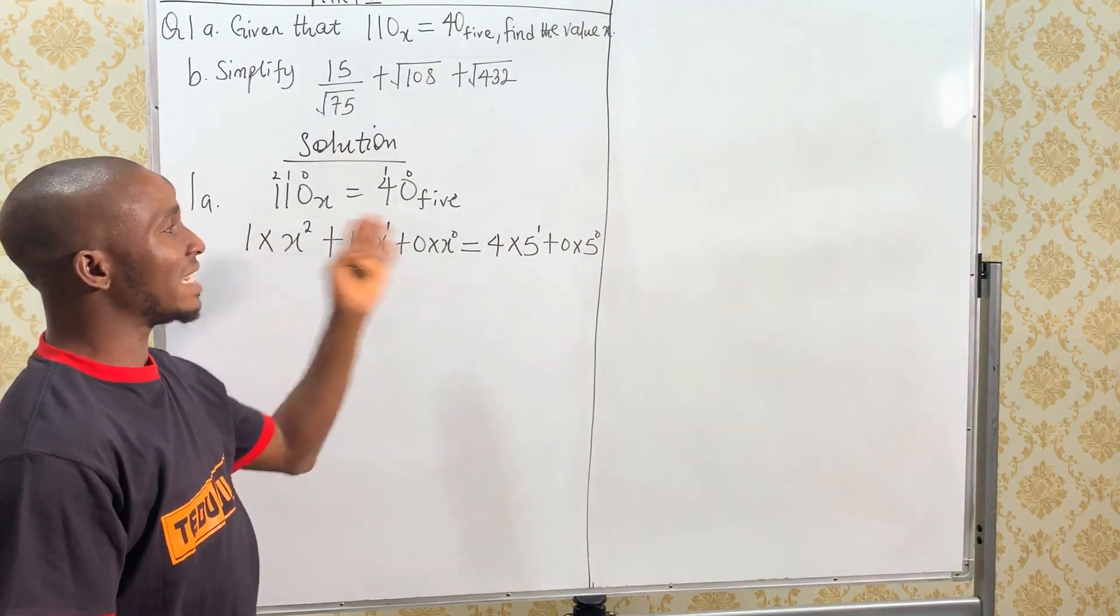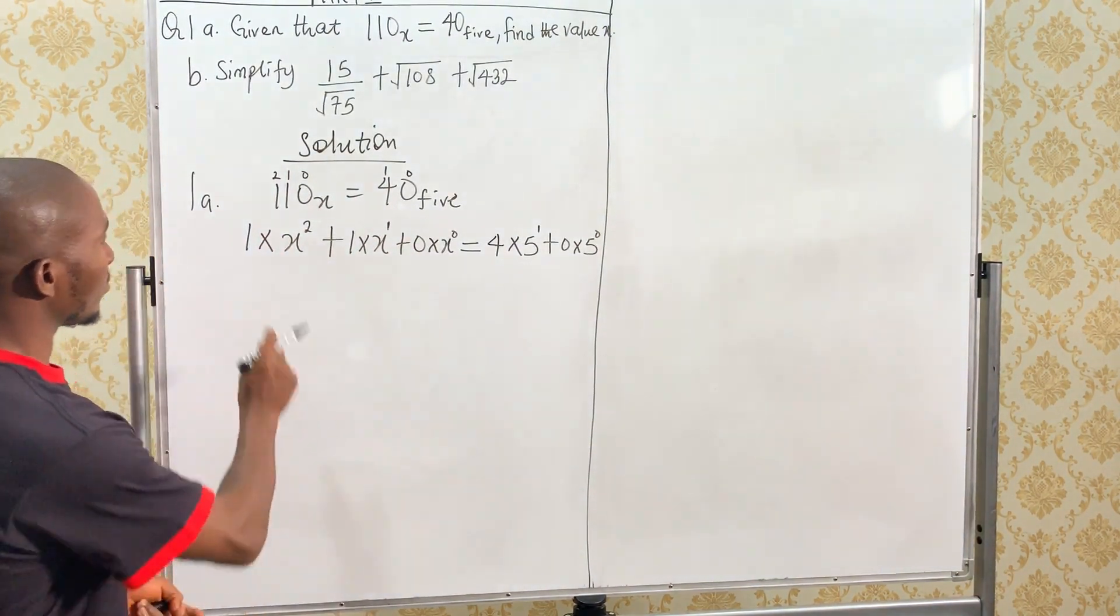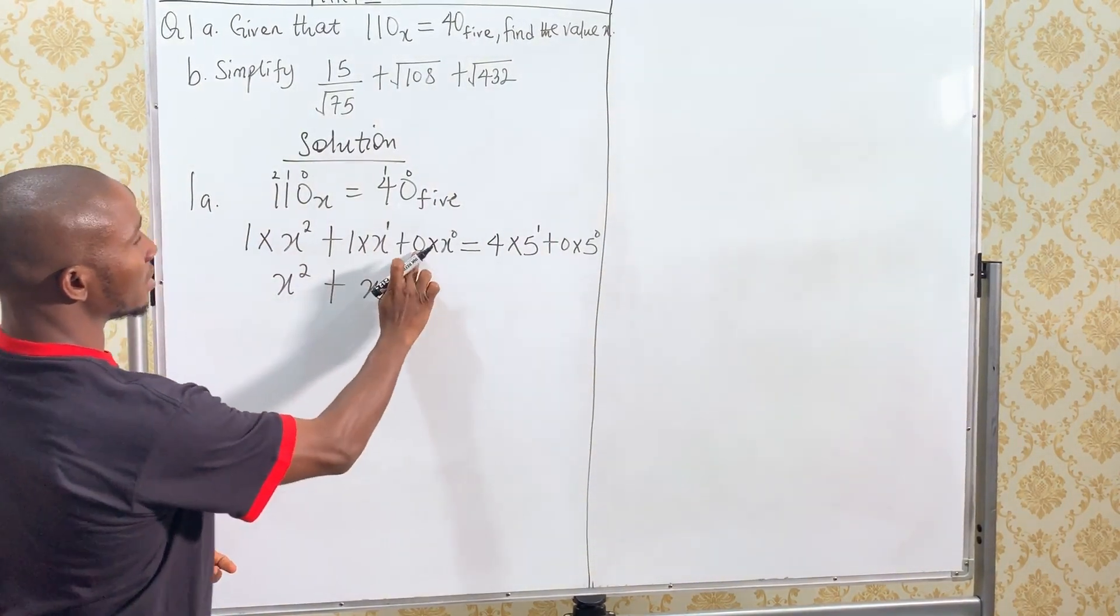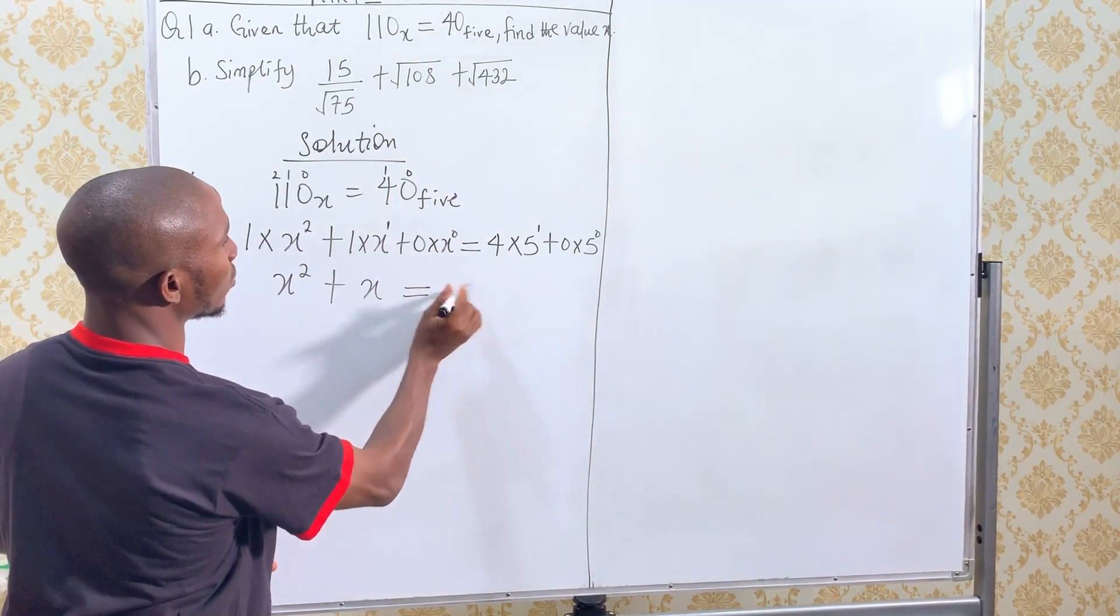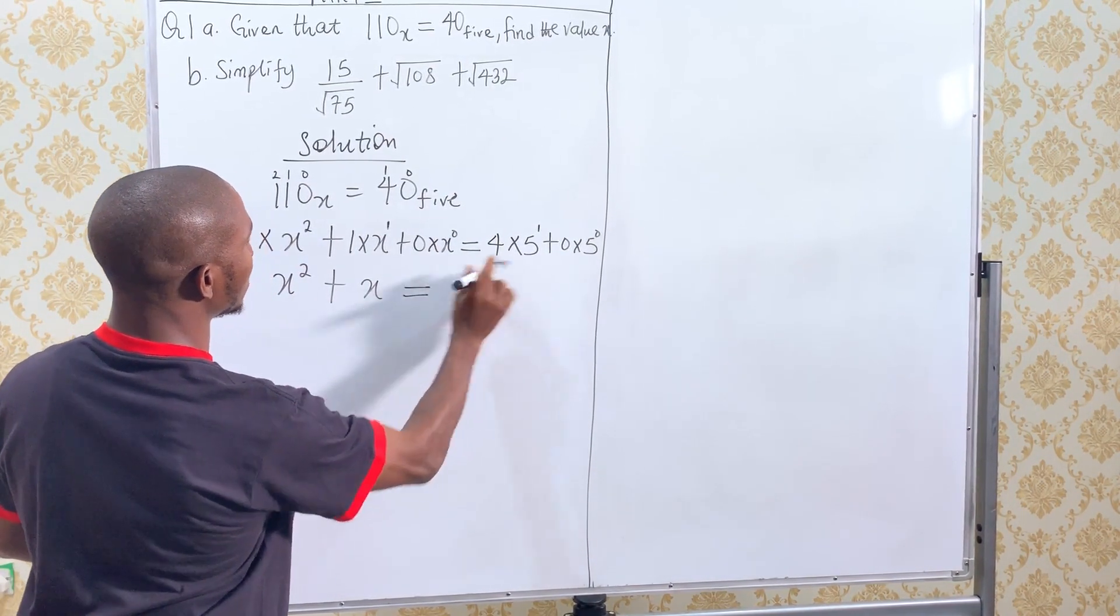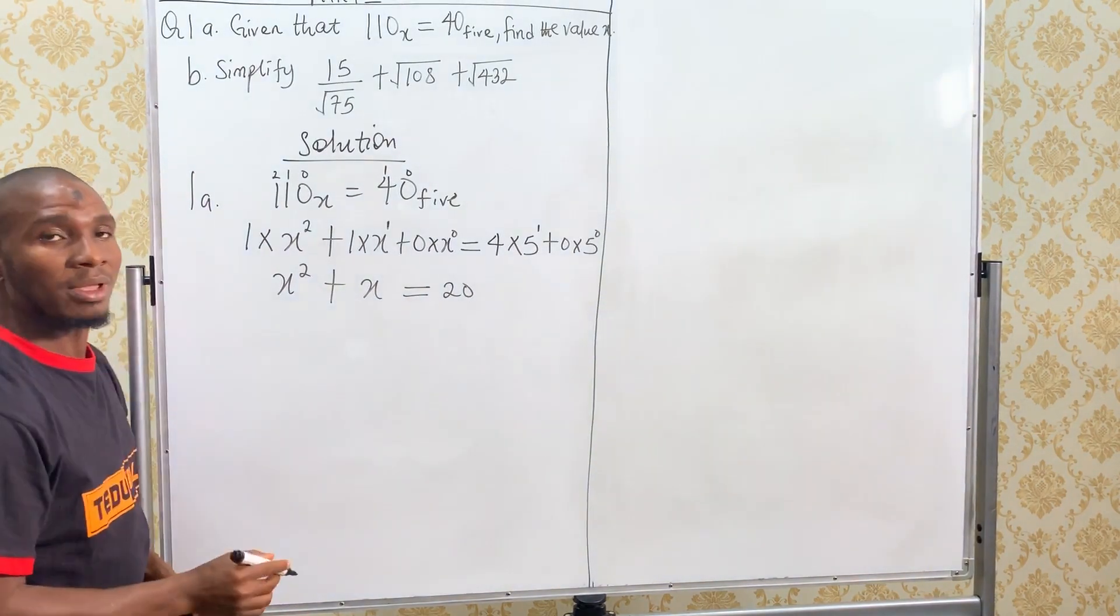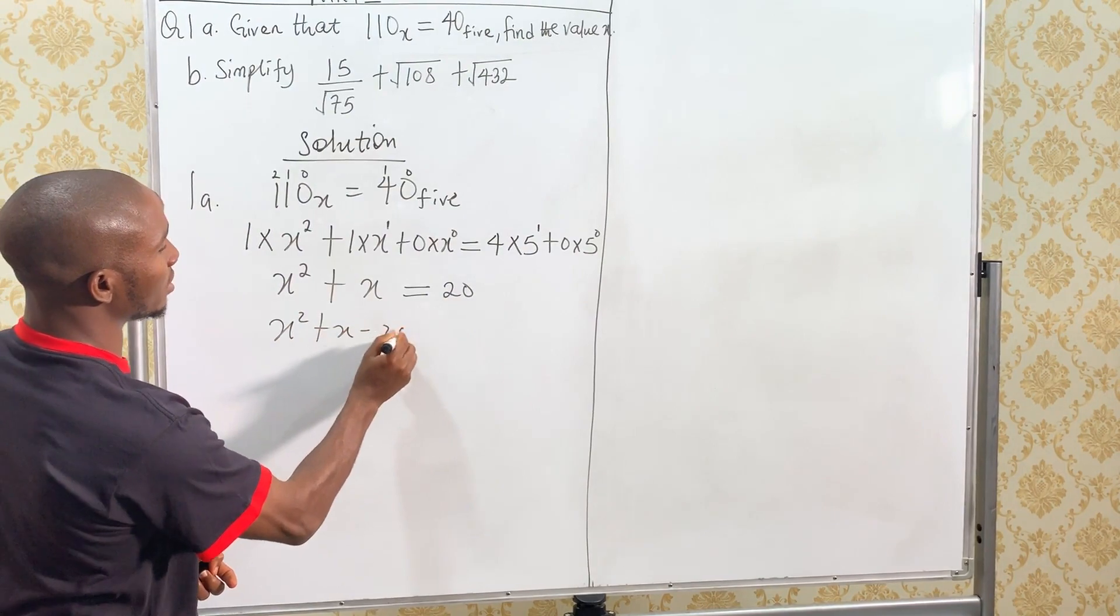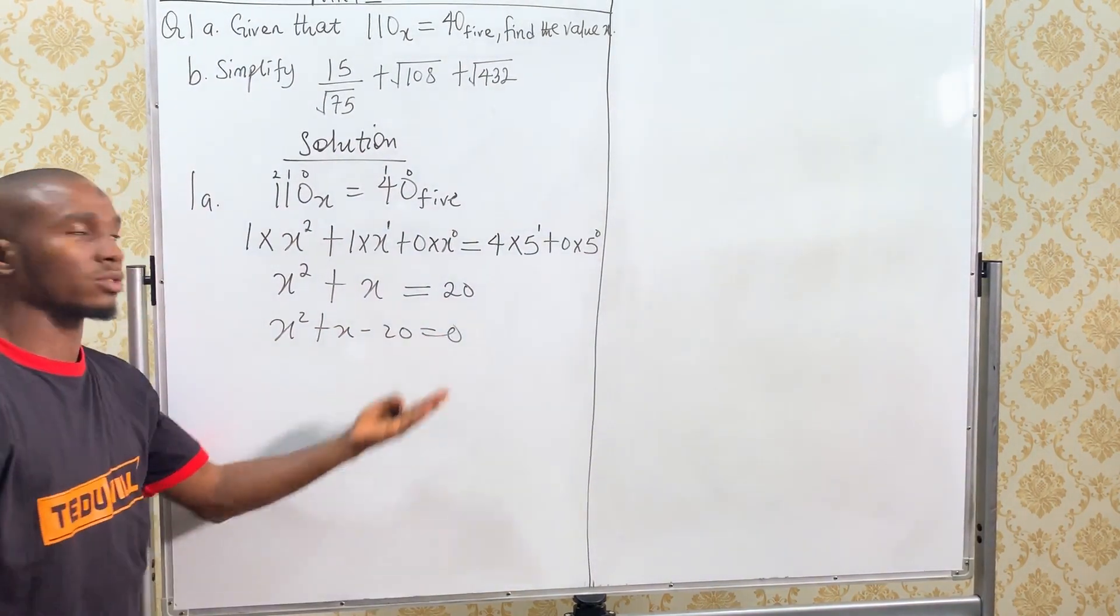X raised to the power 2 times 1, X raised to the power 2, plus X. 0 times this is 0, equals to 4 times 5 is 20. 0 times this is 0, so we have 20 left. Now, when you collect like terms, you transfer this 20 to this side, so we have X squared plus X minus 20 equals to 0, so this is quadratic.